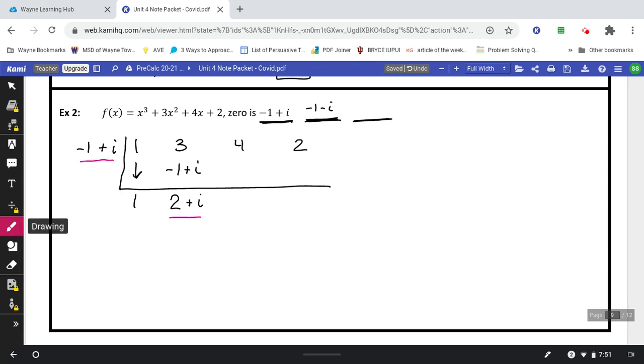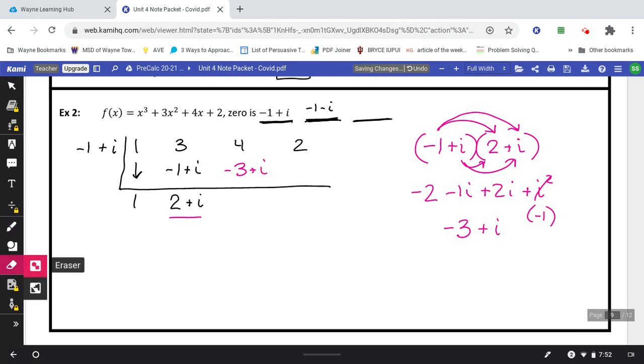Then at this point, I'm going to multiply this and this together. So I'm going to have to do that off to the side. This is going to be a foiling problem. So now would be a good time to pause the video, try to foil that, and then start it back up when you're done. Negative 2 minus 1i plus 2i plus i squared. i squared becomes just negative 1. Combine like terms. Negative 2 and negative 1 makes negative 3. And the negative 1i and positive 2i makes positive 1i or positive i. I'm going to take that and put that answer right here. Then I'll combine like terms. 4 and negative 3 is 1. Bring down the i.